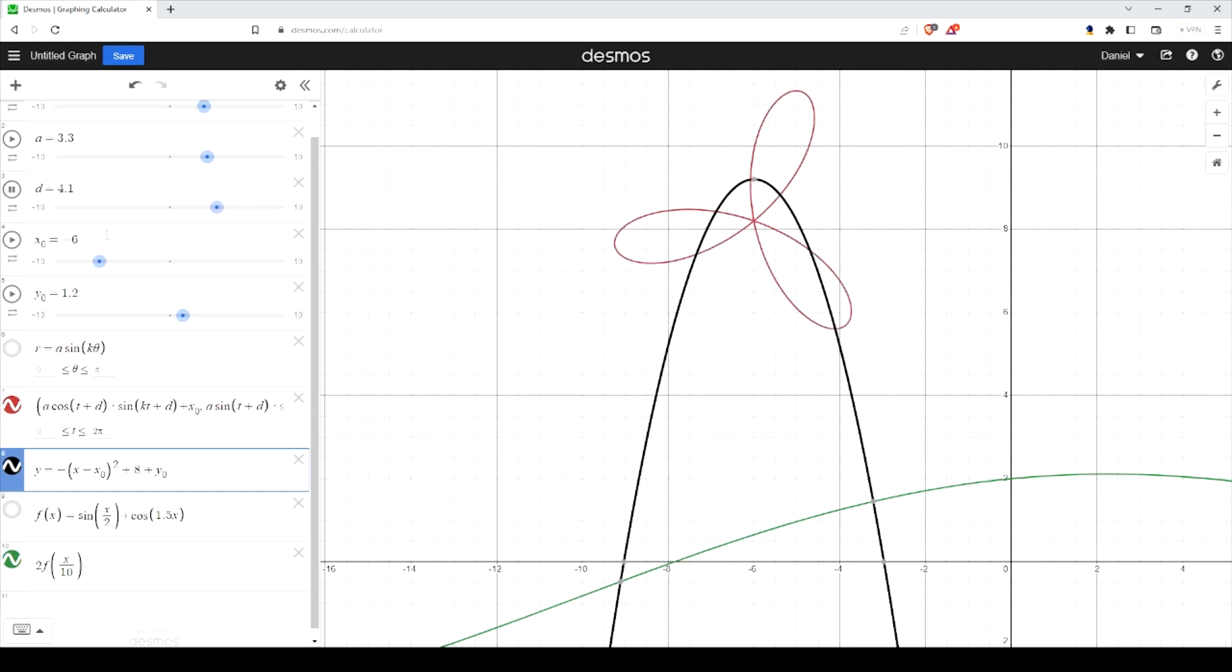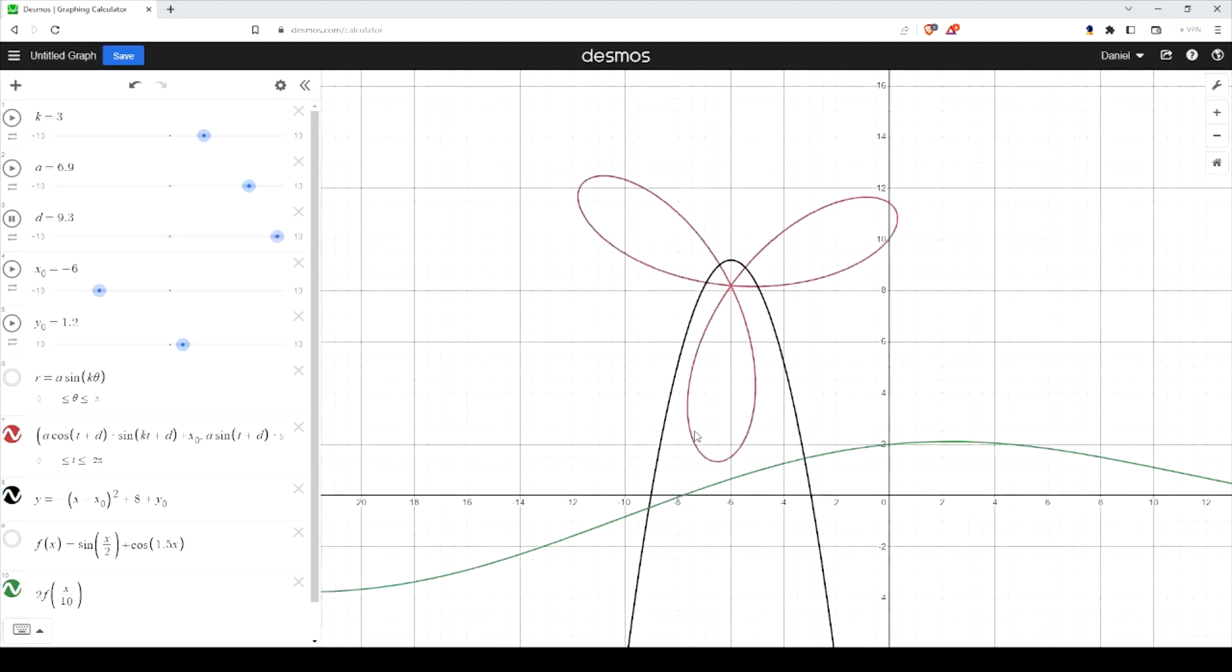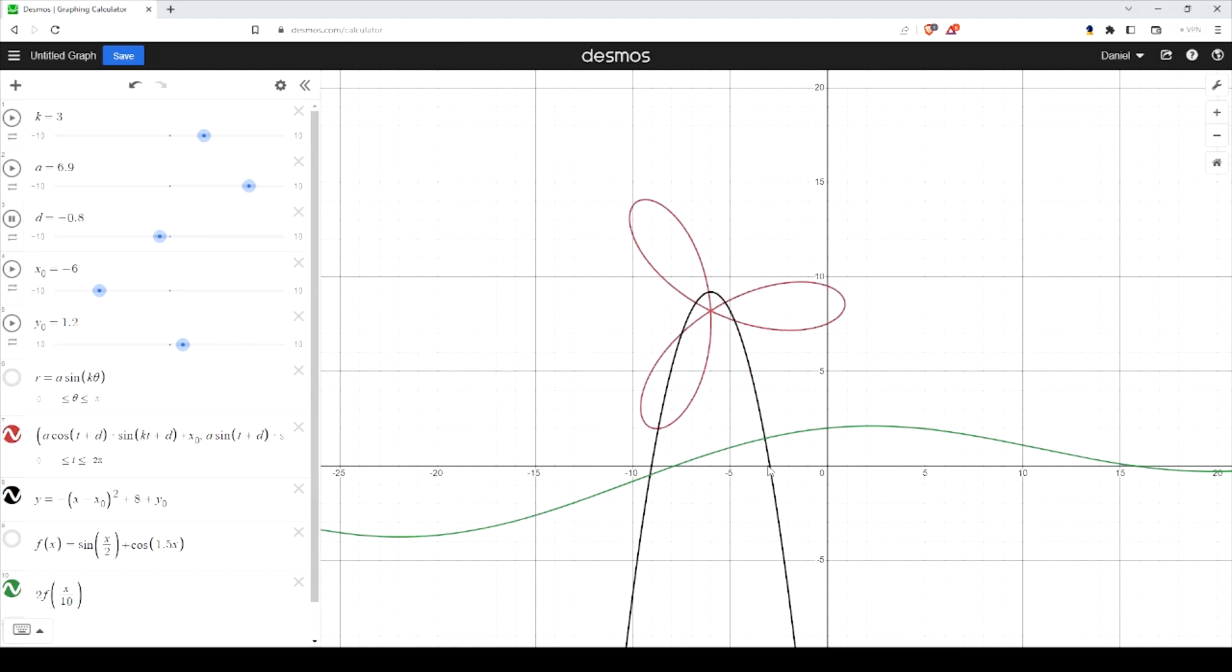And now you can have a windmill spinning in the background. And you can make this big on the fly. You want a bigger windmill, or you just want bigger turbines.